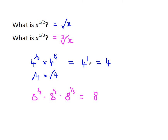This gives us a general rule. When you have a fractional index, the denominator of the fraction means root: a denominator of 2 means square root, a denominator of 3 means cube root. So x to the power of a half is the square root of x, and x to the power of a third is the cube root of x.